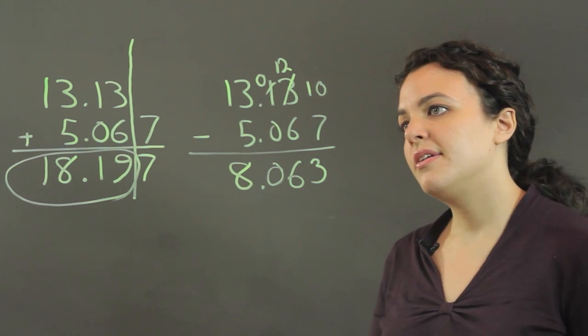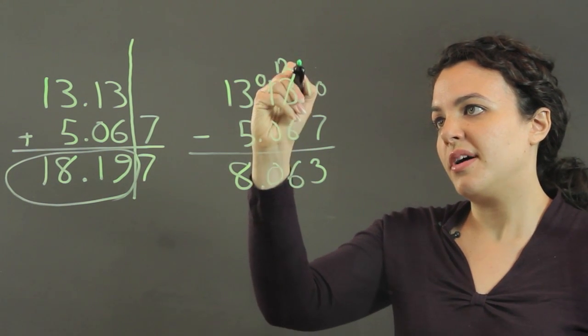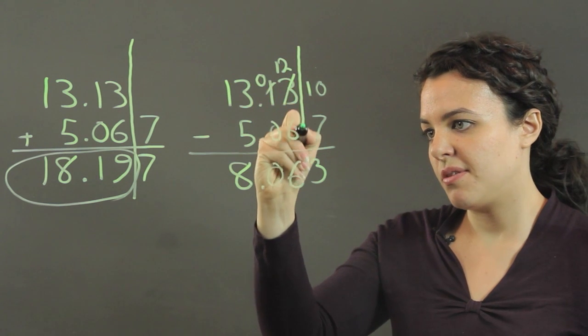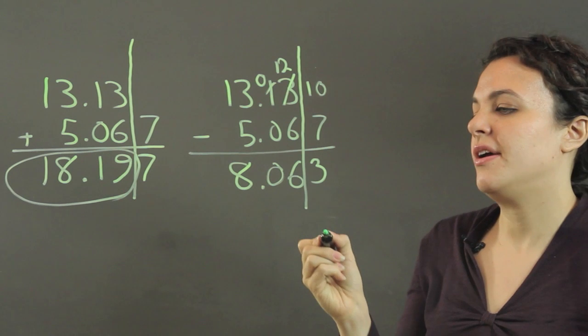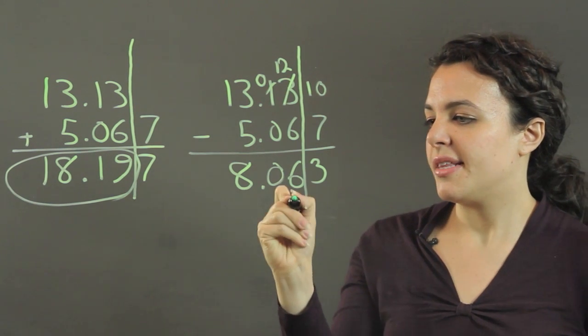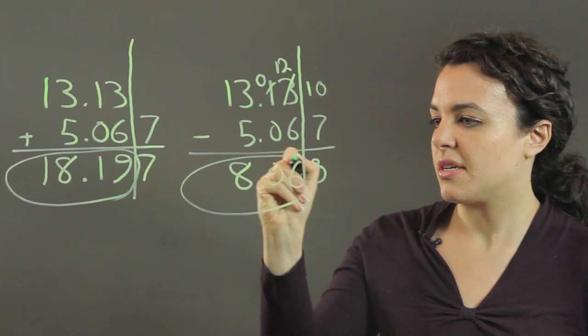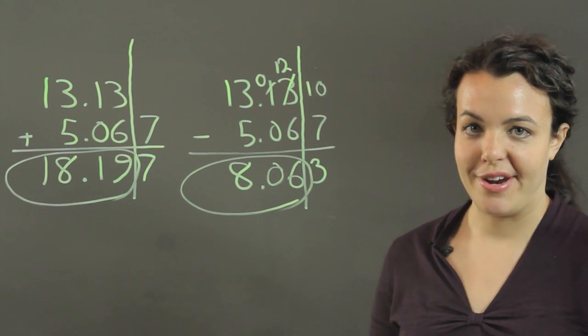And again, we go by whichever had the fewest significant figures to the right of the decimal. We draw this cutoff line. And we get that 8.06 is our answer.